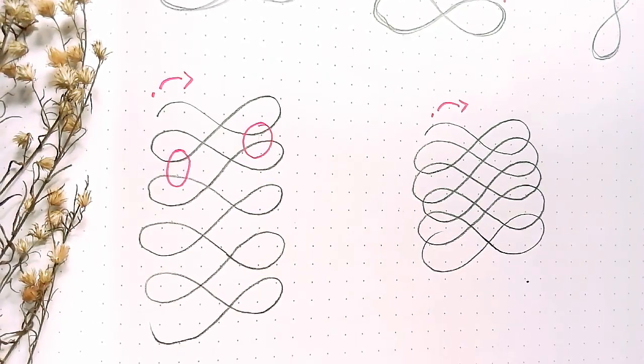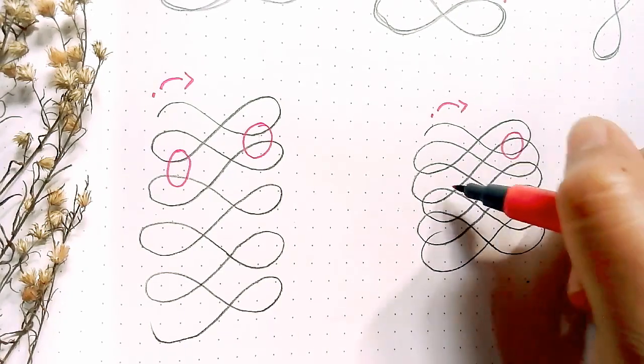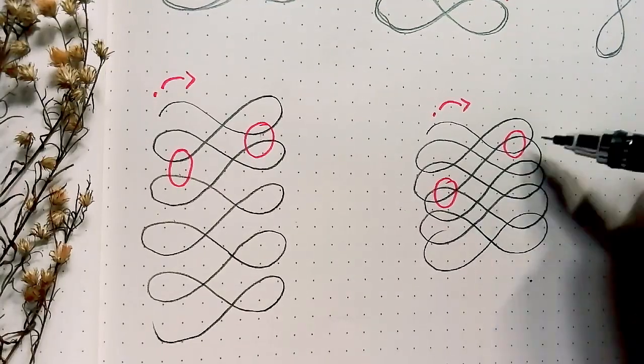There, if you can see the difference between them, here the lines are touching each other or they're compressed.